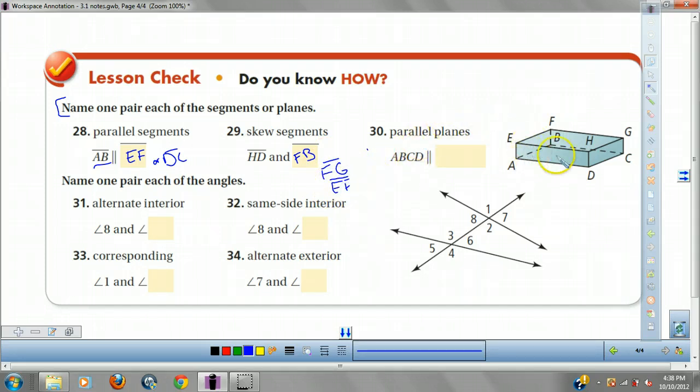Parallel planes, ABCD is the bottom of my box. So I have to think, what's the top of my box on the opposite side? Well, that's EFGH, right?